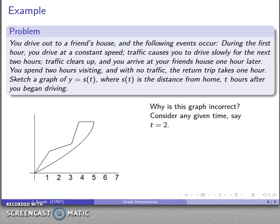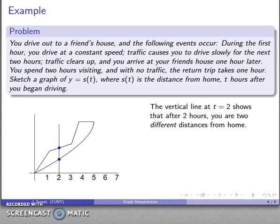Consider what happens at any given time, say t equals two. Our t-axis tells us our time, our vertical axis y is s(t), the distance. Our y values correspond to our distance from home. At t equals two, the thing to notice is I have not one, but two different y values. What that says is that at two hours, I am some distance from home, and at the same time, I'm a different distance from home. That's not actually physically possible. So whatever this graph represents, it is not the graph of this particular function.